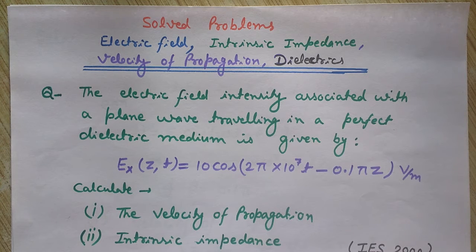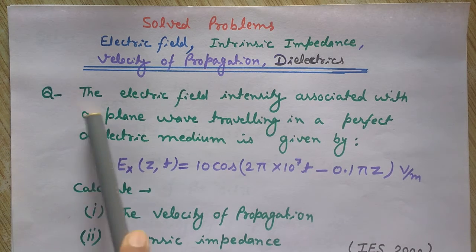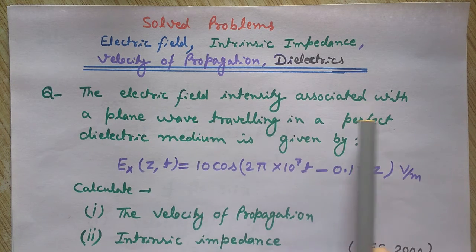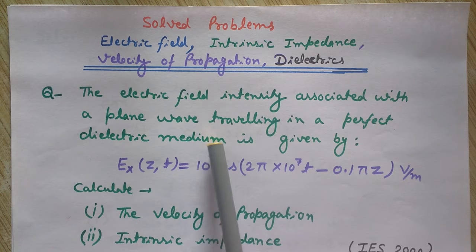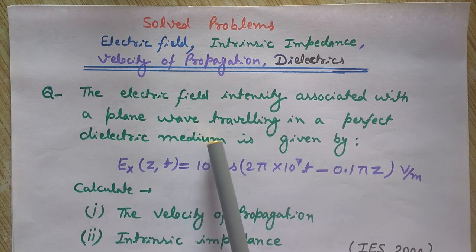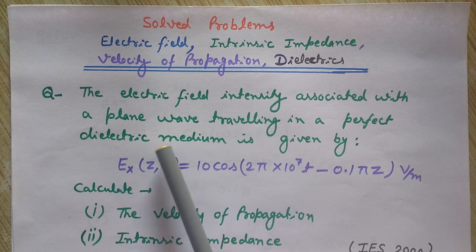The question is: the electric field intensity associated with a plane wave traveling in a perfect dielectric medium is given by this equation. Perfect dielectric medium means the conductivity sigma is zero.